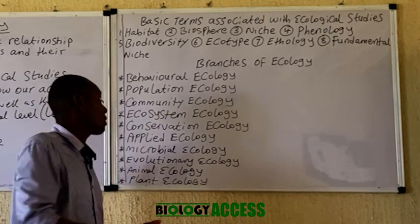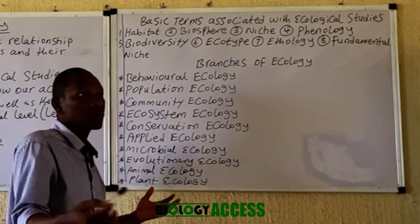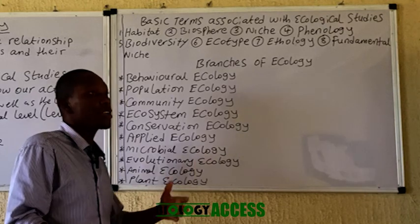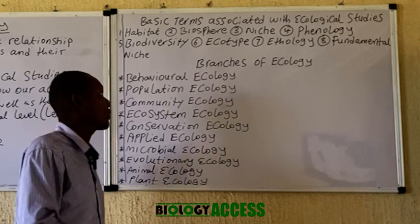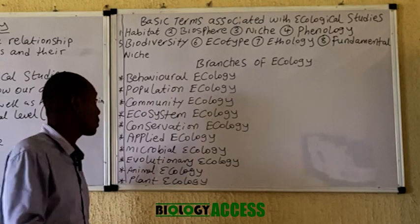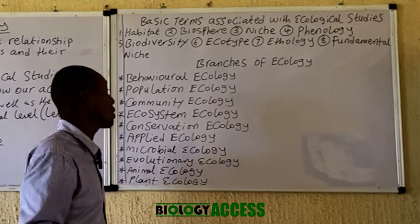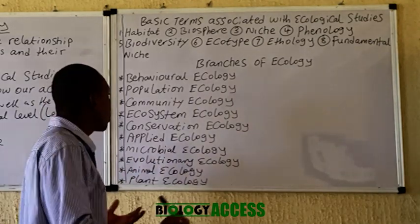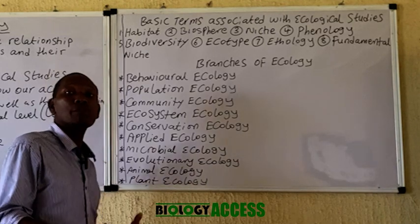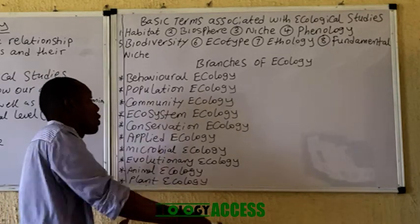In population ecology, you are studying the population — their growth rate, their density, how they are affected by certain conditions, what factors affect their growth, and the type of growth they are experiencing. In community ecology, you study the different species inhabiting a particular geographical location and their interactions — predator-prey interaction, parasitism, mutualism, commensalism. Ecosystem ecology covers what I mentioned earlier when discussing ecosystems, and a different video will be posted on that.